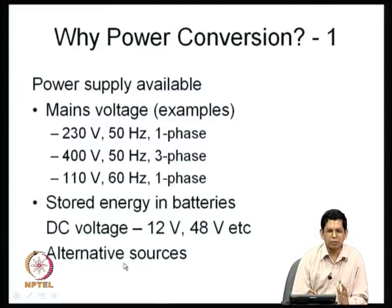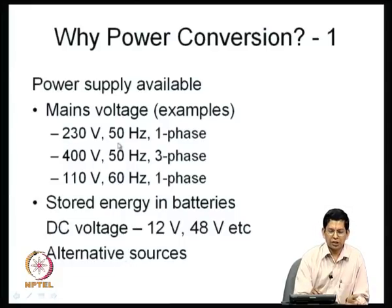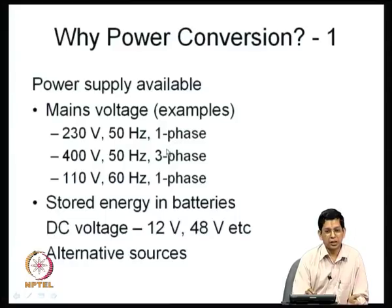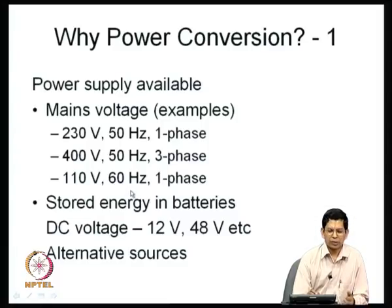You have electrical power supplied by utilities, generally in the form of AC. In India you have 230 volt, 50 Hz single-phase AC, and also 400 volt, 50 Hz three-phase. In other parts of the world you may have 110 volt 60 Hz, or 208 volts, or even 400 Hz — various kinds of power supplies are available from the mains.